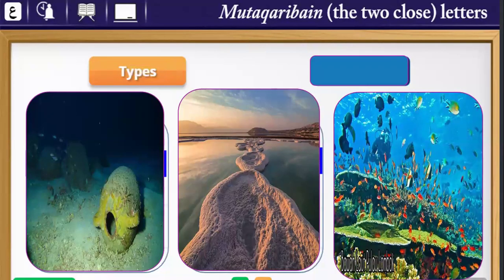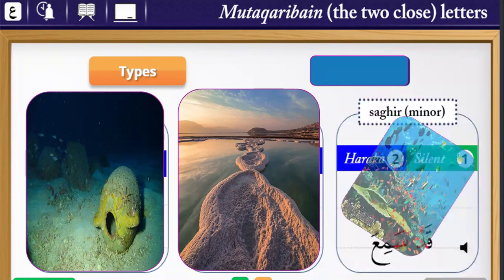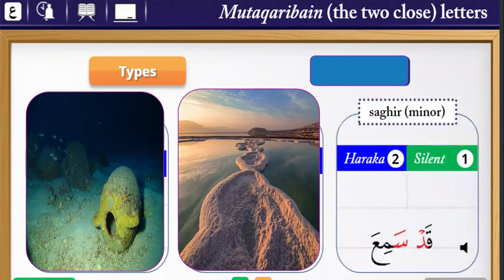Now let's look at the types of متقاربين. There are three types. Number one: صغير — minor. صغير means the first letter has سكون and the second letter has حركة. For example: قَدْ سَمِعَ.